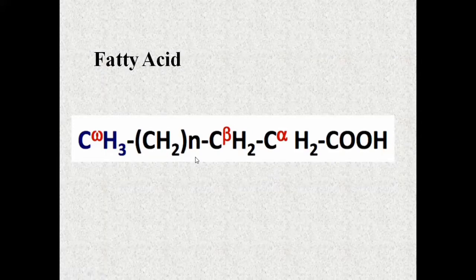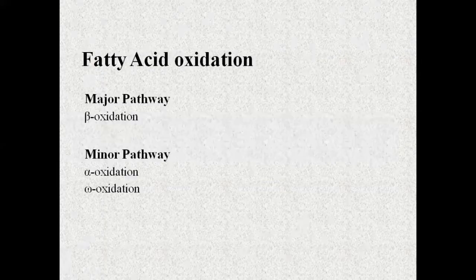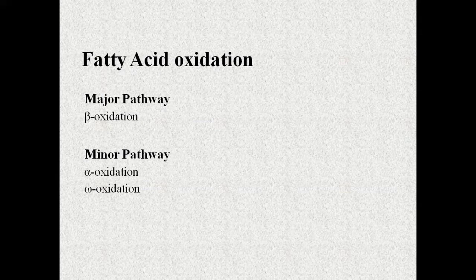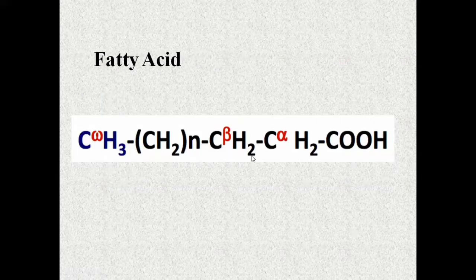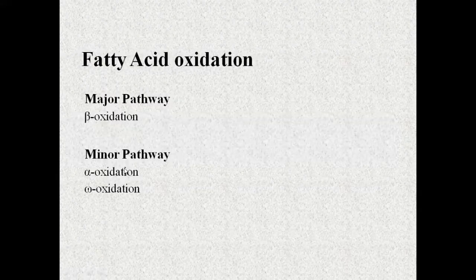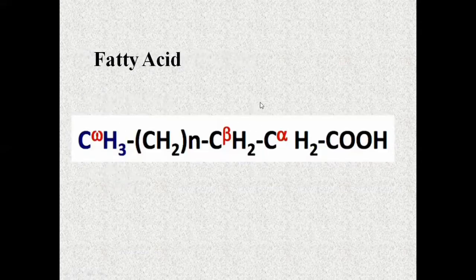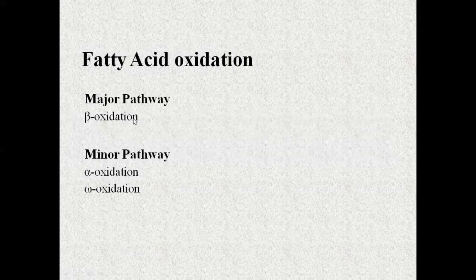What happens in the cells is that the fatty acid passes through the process of oxidation. Oxidation means electrons or hydrogen are removed. Oxidation depends on which carbon bond is breaking. The major pathway is beta-oxidation, and there are other minor pathways that occur: alpha-oxidation and omega-oxidation.